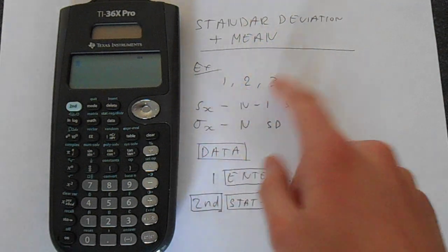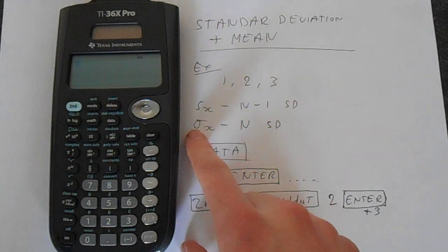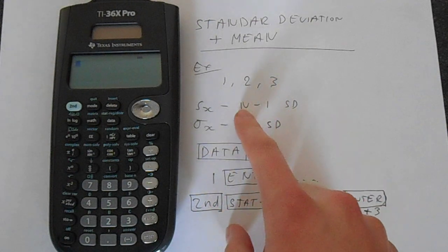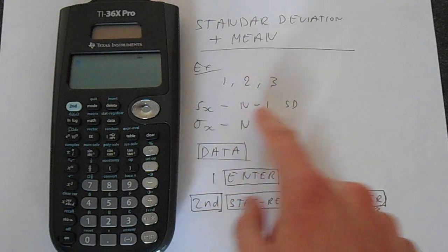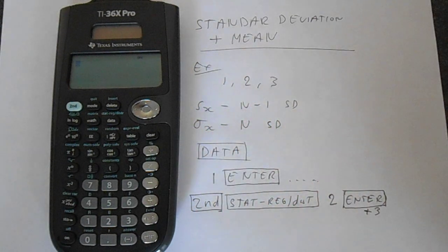So we're just going to take 1, 2, 3. And the result you'll get for the standard deviation, you'll have a choice SX and Sigma X. SX is the standard deviation divided by N minus 1, and then you've got Sigma X which is the N definition of the standard deviation.